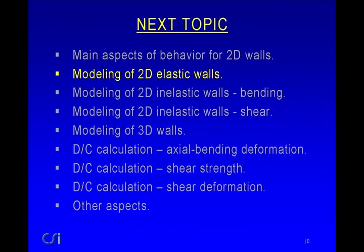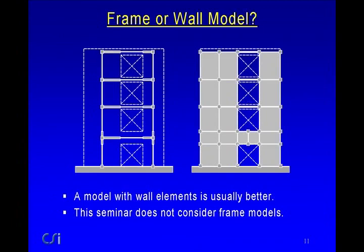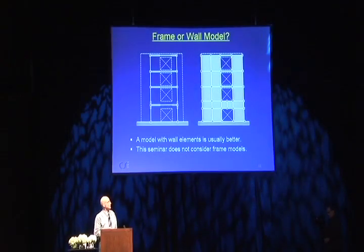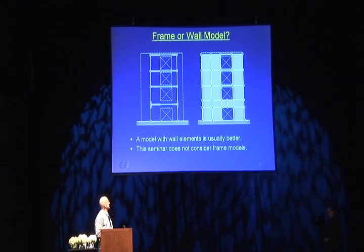What about modeling 2D elastic walls? A frame model on the left has columns and beams with substantial end zones for the beams. A simple wall could also be modeled with four-node or higher-order finite elements — solid-type elements. I would argue that a model with wall elements is usually better. In this seminar I'm not going to consider frame models; if they were used, you would apply the principles discussed in the last session.